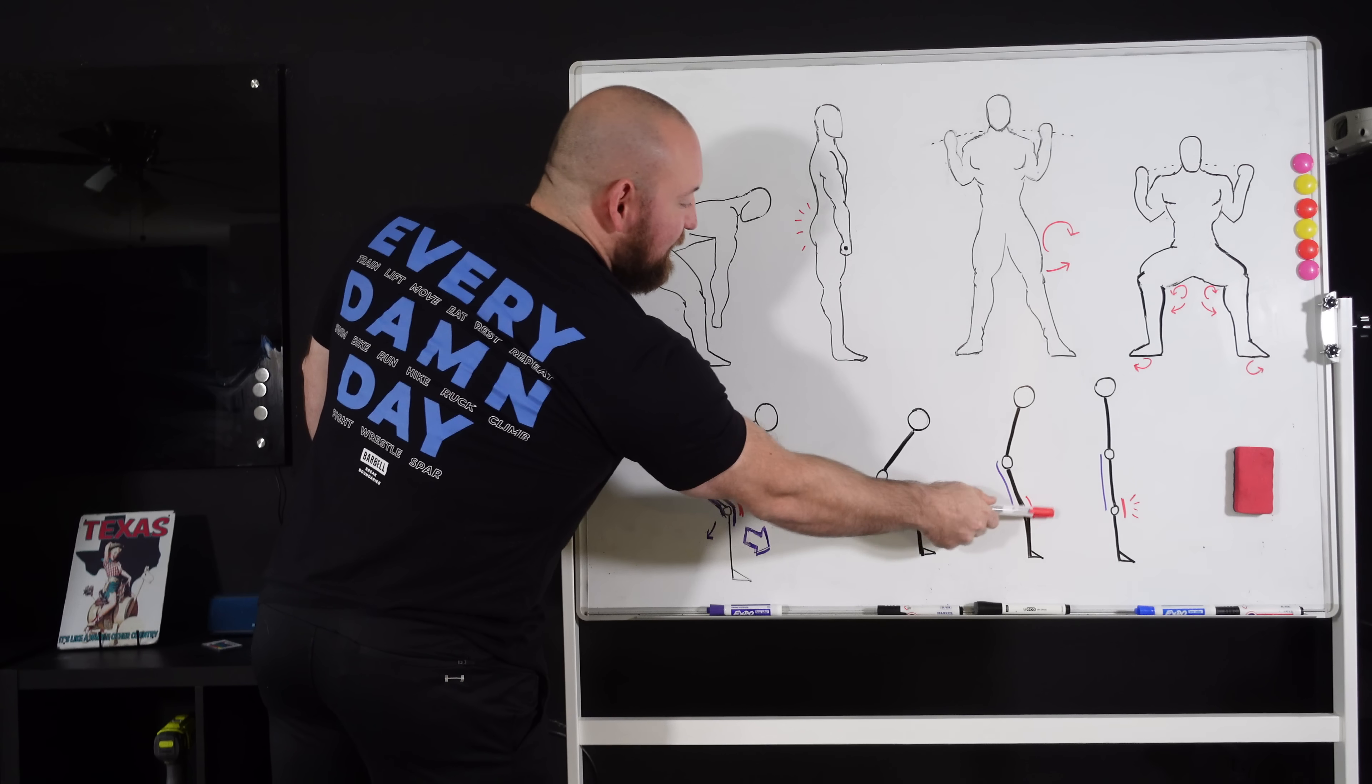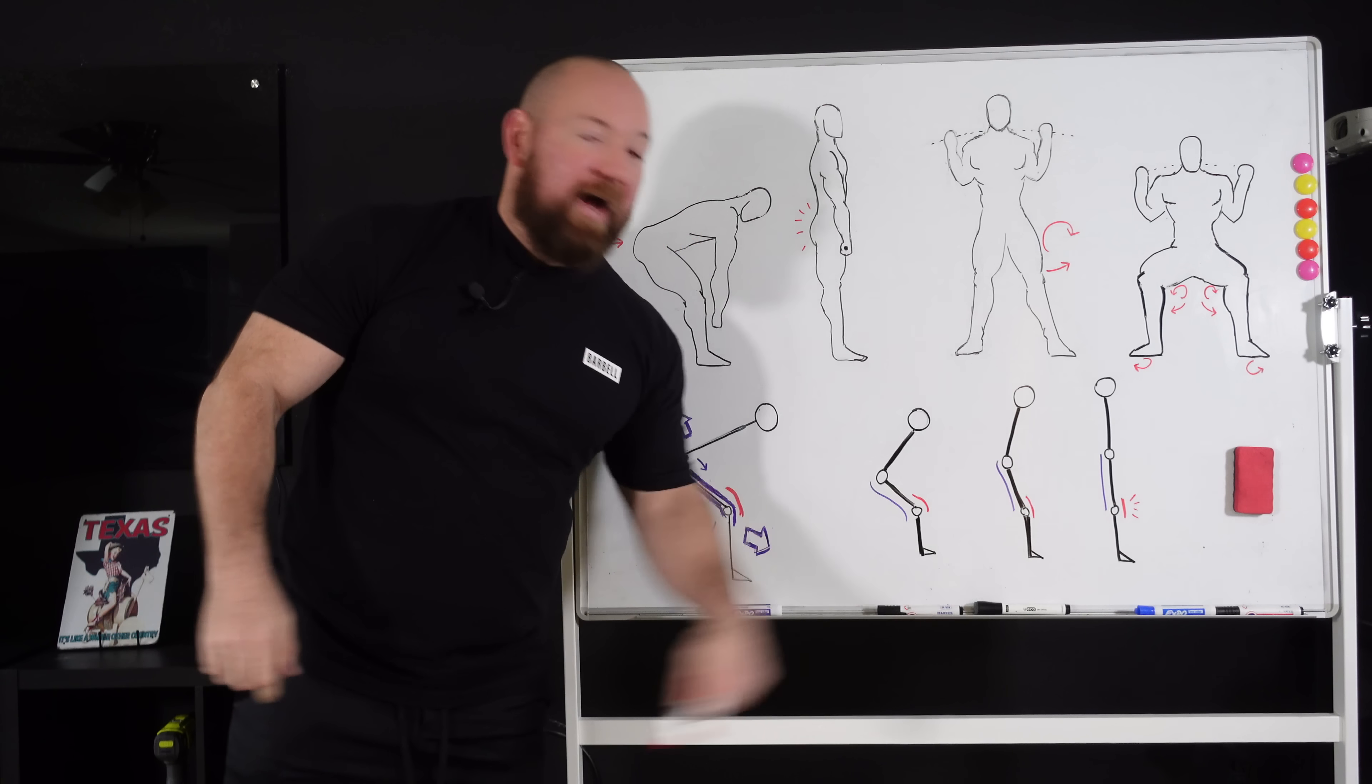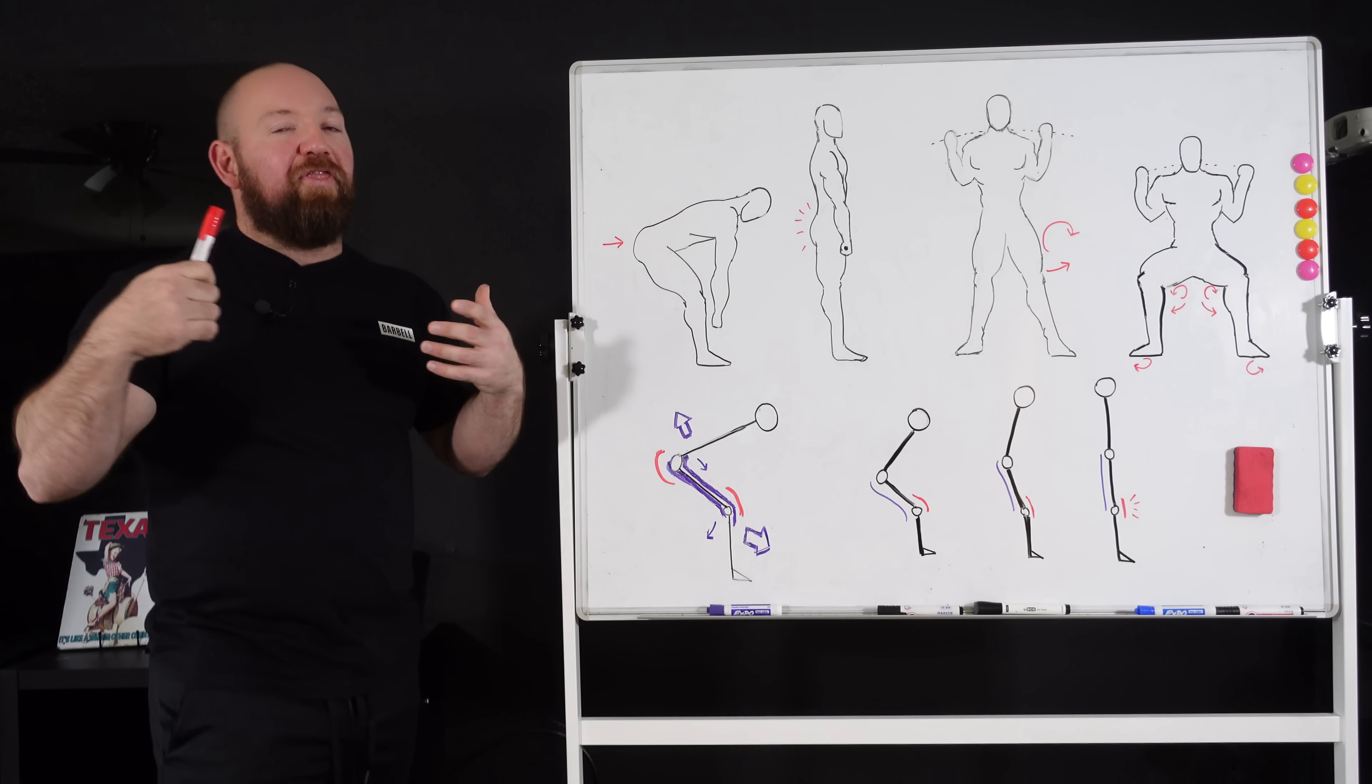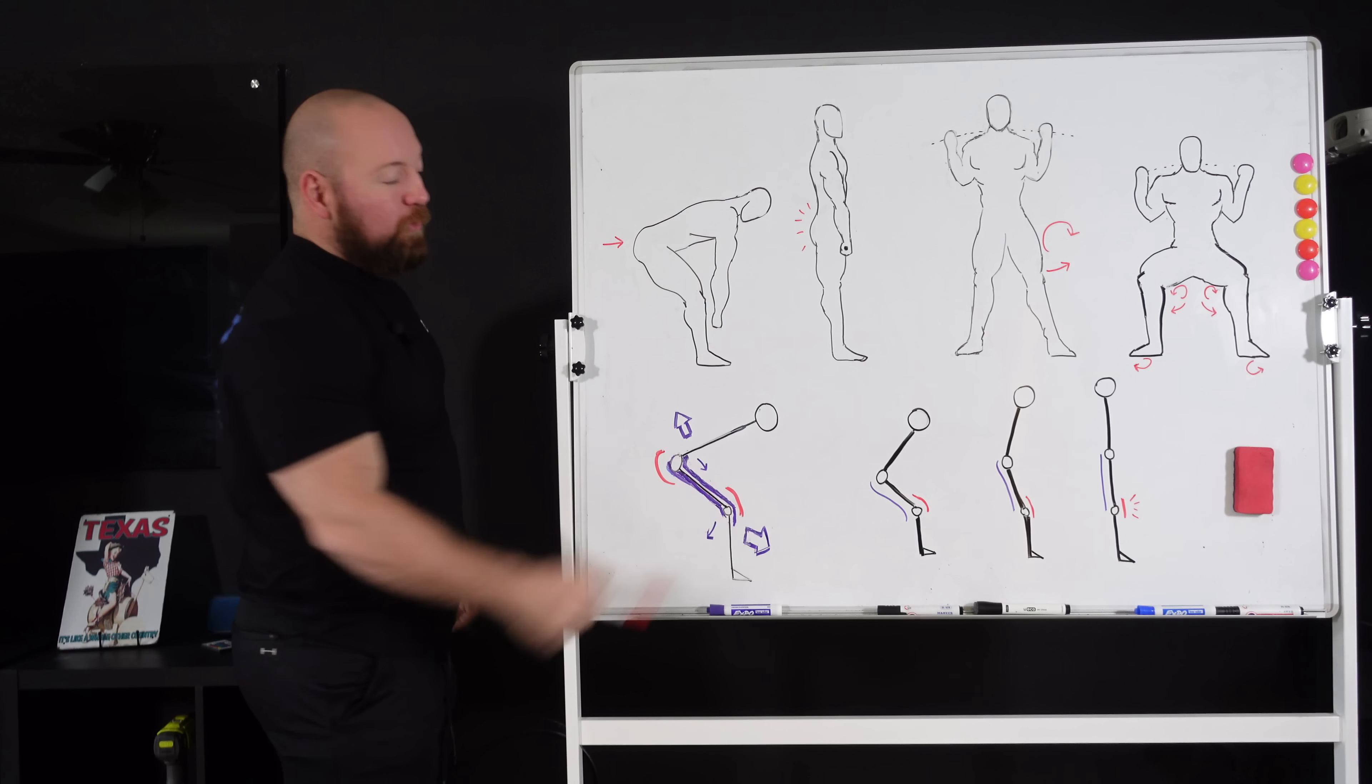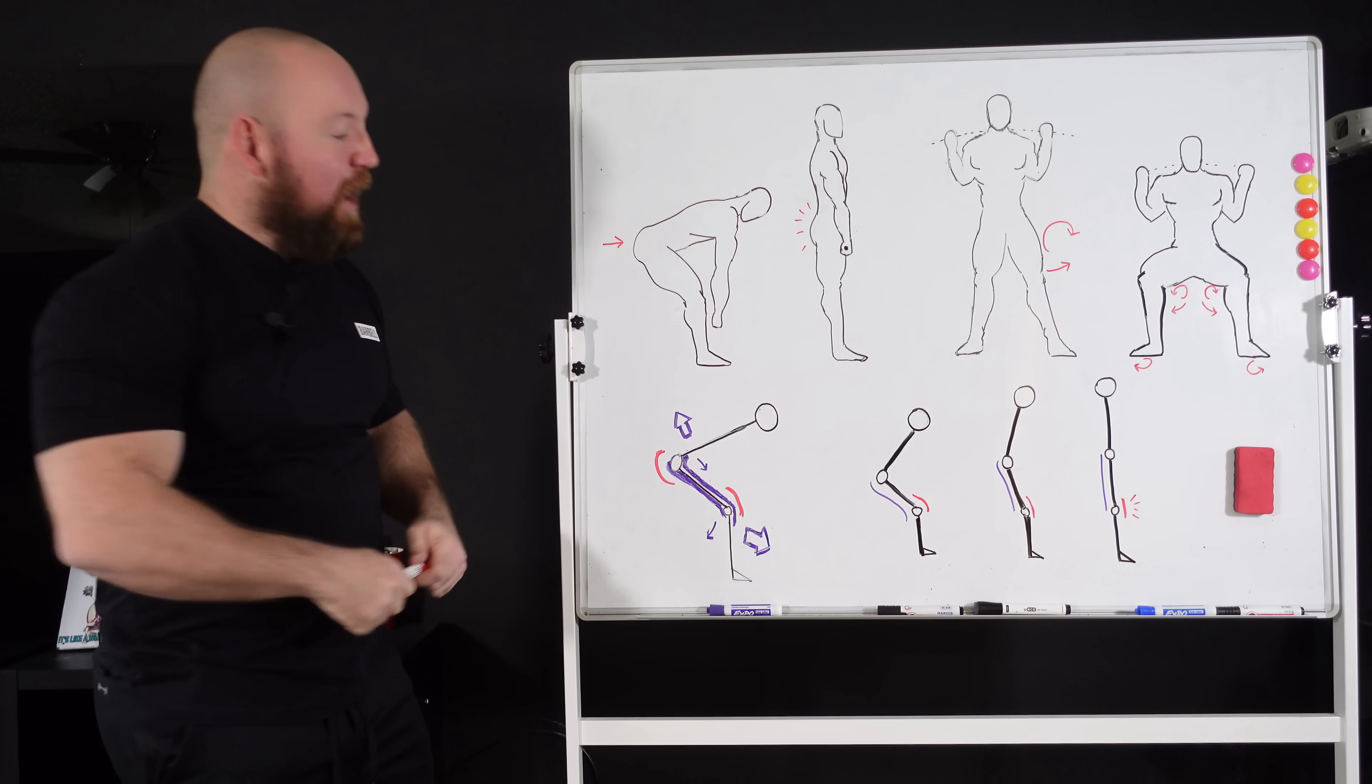that string starts to get shorter and shorter until all the way at the end, that quadriceps snaps your knee to lockout. And that's where the string is at the absolute tightest at the top. What that means is that the movement generated by these single joint muscles actually affects how the two joint antagonists work to get you to lockout.